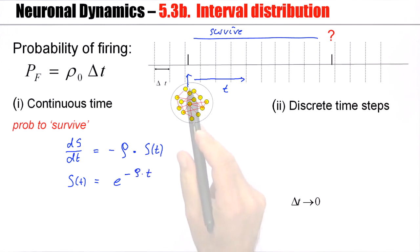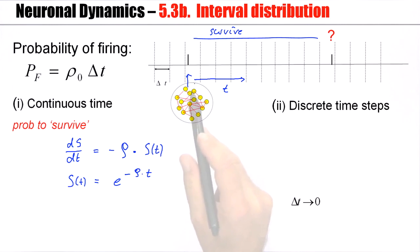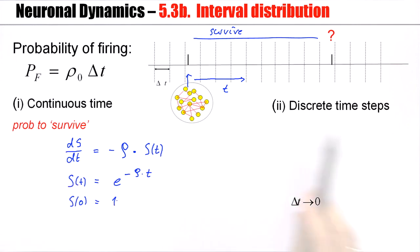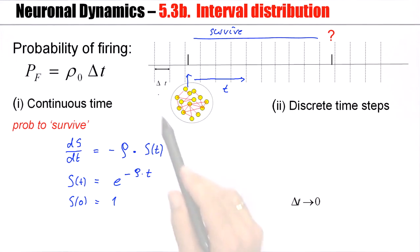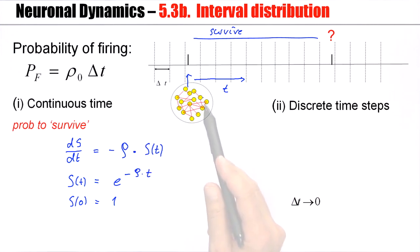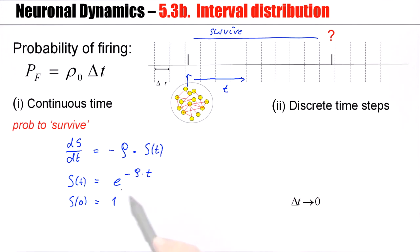All neurons have fired here; the probability to survive at zero is one, so s of zero equals one. This probability to survive is completely analogous to the case of radioactive decay. I have a large group of particles with a certain decay rate — this is my rho — and because of this spontaneous decay, the group that still survives will decay exponentially.